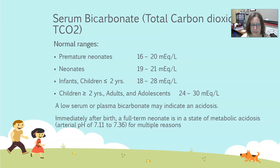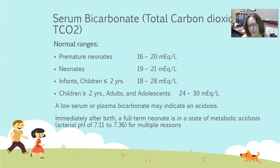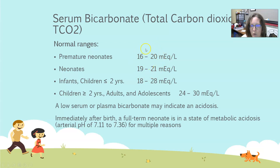The concern here is that a low serum or plasma bicarb could indicate acidosis, so we're worried about these levels being low. Immediately after birth, a full-term neonate is in a state of metabolic acidosis — the arterial pH on average is anywhere from 7.11 to 7.36. This is due to multiple reasons having to do with the birth process and going from in utero to breathing air. It's normal for them to be slightly acidotic, which is why these bicarb values are lower, because in metabolic acidosis, serum bicarb and pH are both low.